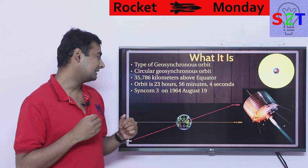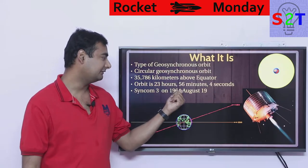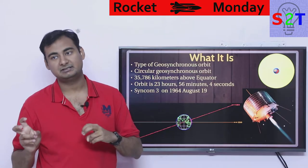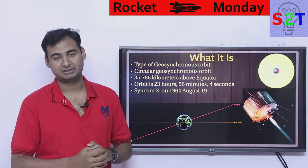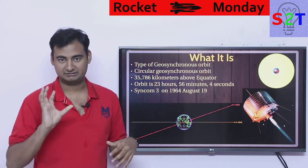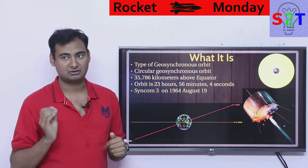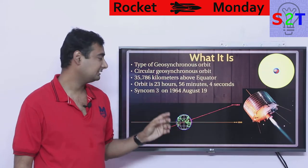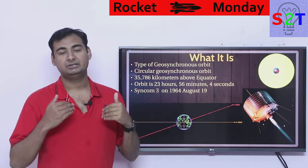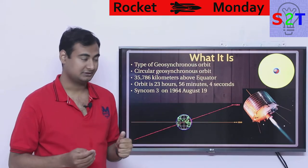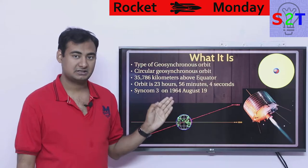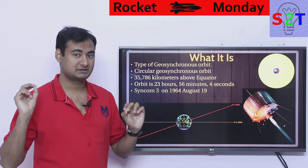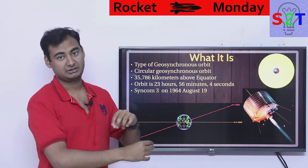Geosynchronous means exactly what it says — you are in sync with Earth. Your orbit is happening at exactly 23 hours, 56 minutes, and 4 seconds, which is what we call a sidereal day. This is basically why we have leap years, to compensate for the fact that the 24-hour orbital period is not exact. Once you are orbiting at this exact rate, you end up in a sync position, basically rotating with Earth.